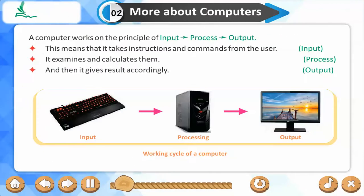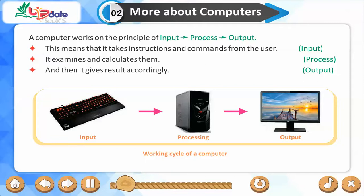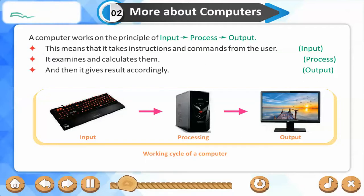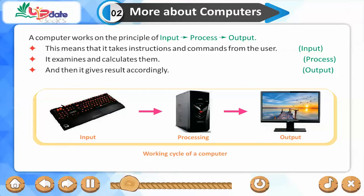A computer works on the principle of input, process, and output. This means that it takes instructions and commands from the user (input), examines and calculates them (process), and then gives results accordingly (output). The working cycle of a computer is: input → processing → output.